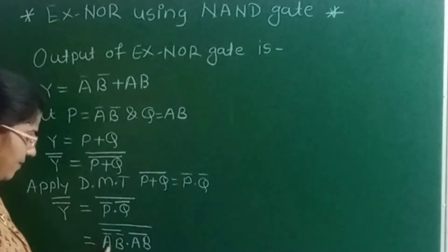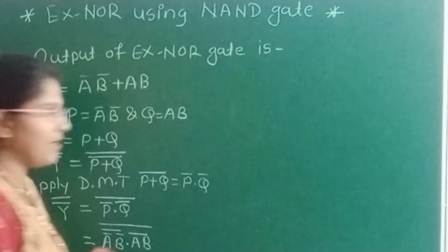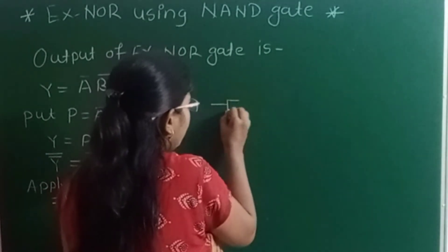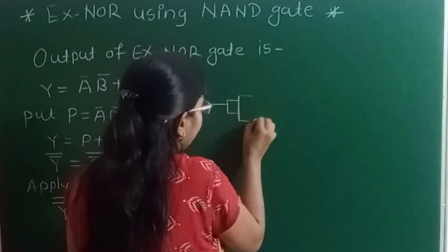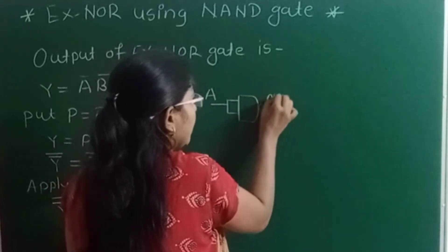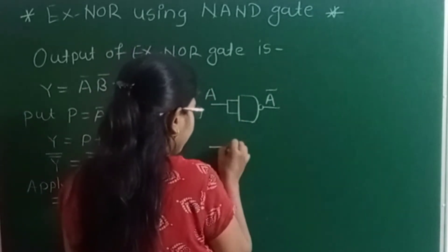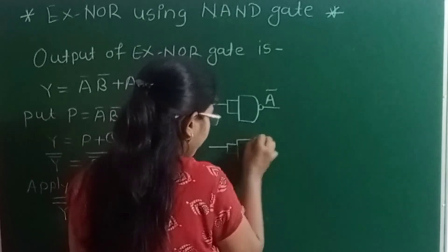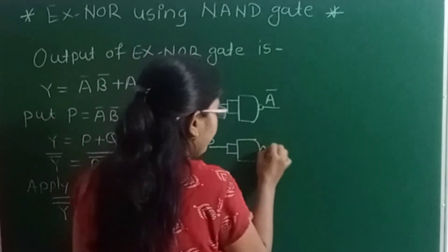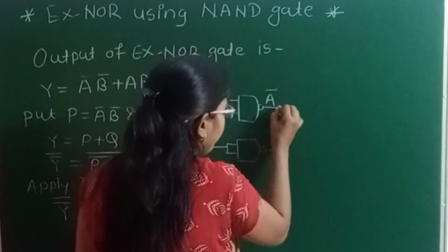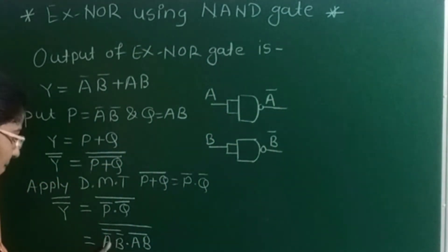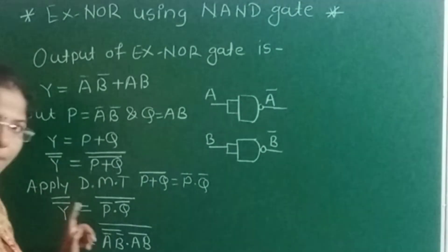The first term is A'B' and its complement. To get A', I need to use one NAND gate with input A — its output is A'. Next, input B through another NAND gate — its output will be B'. So I have obtained A' as well as B'.